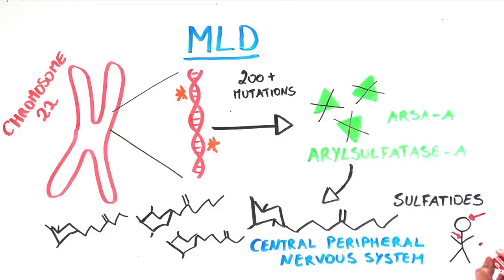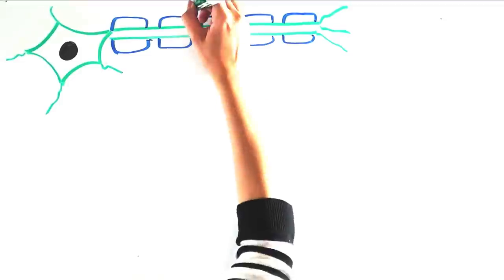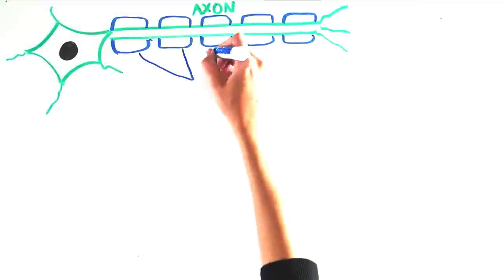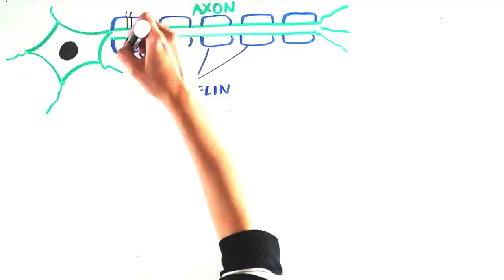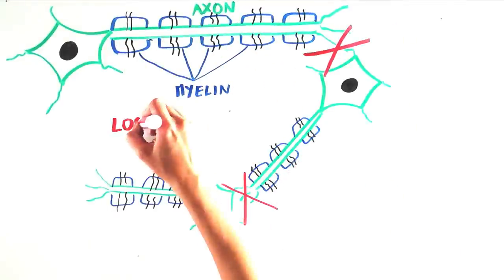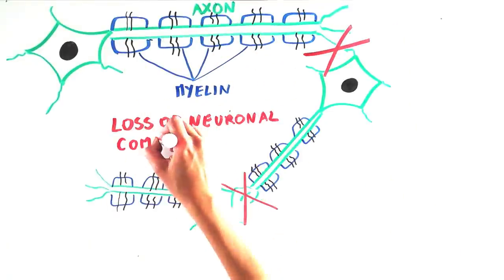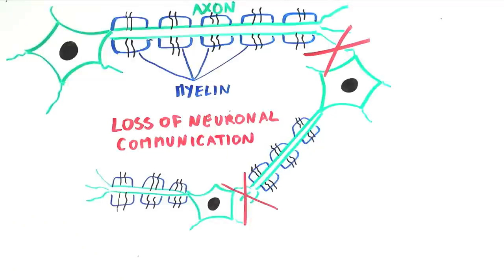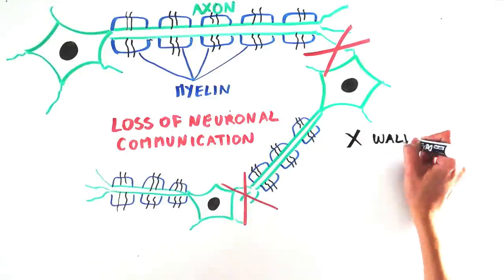i.e. the brain, spinal cord, and nerves. The accumulation results in the protective sheath that surrounds the axons of neurons, called myelin, being destroyed. When neurons can no longer properly communicate with each other, there is a loss in motor and cognitive skills, resulting in a variety of symptoms that MLD patients experience,